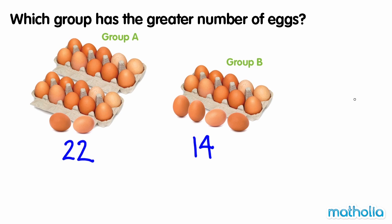To compare these numbers, let's look at the digits in the tens place. In group A, there are two tens. In group B, there is one ten. Two tens are greater than one ten. Twenty-two is greater than fourteen. So group A has the greater number of eggs.